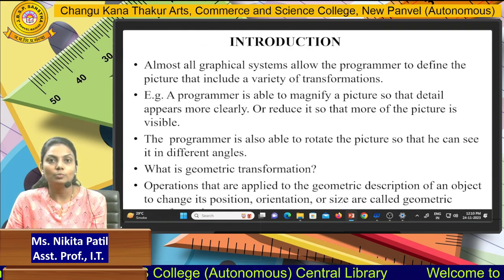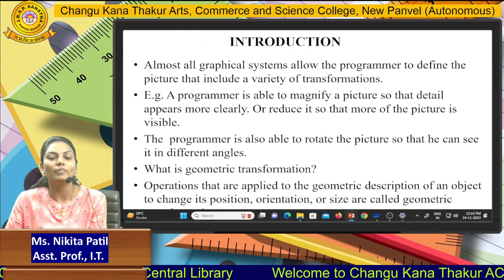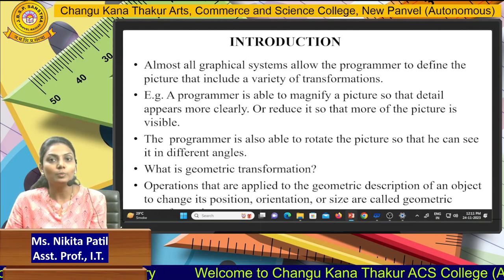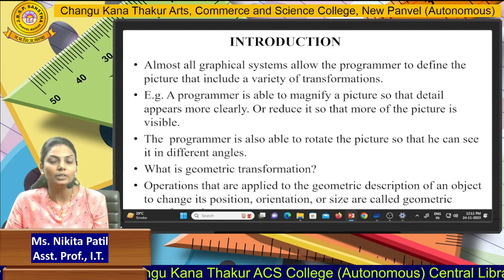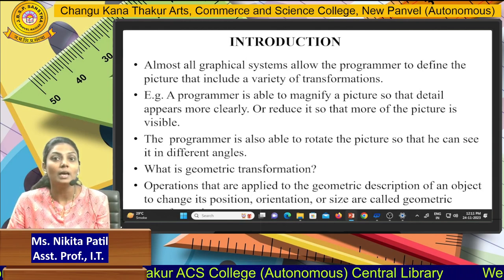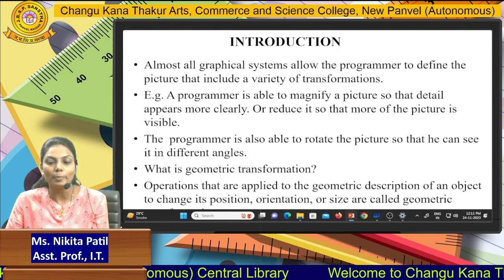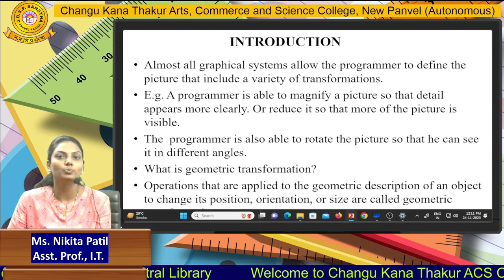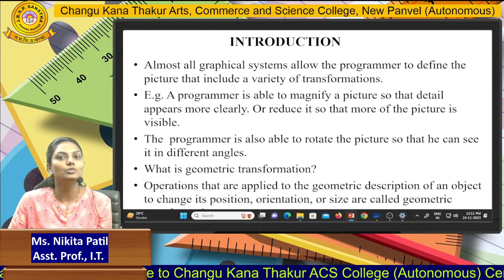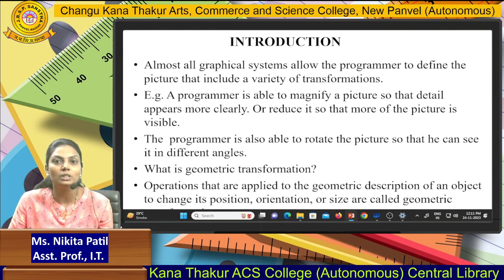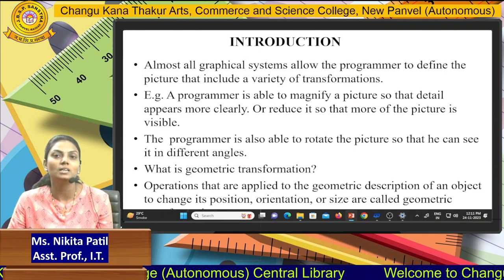First, the introduction. Almost all graphical systems allow the program to define pictures that include a variety of transformations. Why do we want transformations? If you take any image, or design your graphics or animation, your image can be transformed at any angle or in any space with rotations. For example, a program is able to magnify a picture so that the detail appears more clearly, or reduce it so that more of the picture is visible. A program is also able to rotate the picture so it can be used at a different angle.